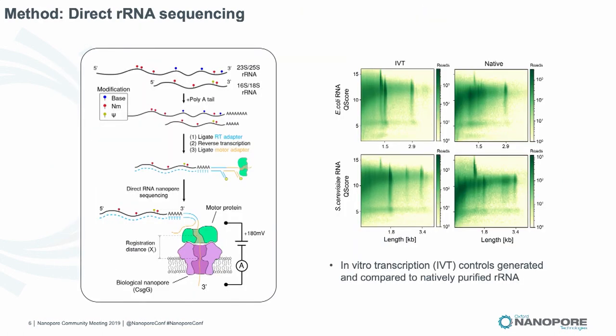So we're just purifying ribosomal RNA and we poly-A tail it. We don't have to do any enrichment because it's highly abundant, and we port this directly into the direct RNA sequencing protocol. We also generated IVT controls for comparison with the native RNA to aid in detection of these modifications. What I'm showing here is the quality score versus the length for E. coli and yeast for the IVT and the native RNA, with streaks approximately at the regions of the small and large subunit for each organism.